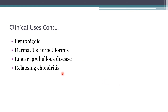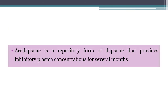Owing to its anti-inflammatory action, dapsone is also used for pemphigoid, dermatitis herpetiformis, linear IgA bullous disease, and relapsing polychondritis. ACEDAPSONE is a repository form of dapsone that provides inhibitory plasma concentrations for several months — remember this as a possible MCQ: ACEDAPSONE is the repository form of dapsone.